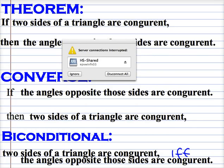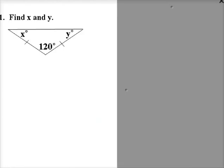Let's use that to solve some problems. Here I have an isosceles triangle. I know it's isosceles because of the congruence marks on the legs. If the legs are congruent, then the base angles are congruent. These are the base angles, and those are congruent. In other words, x and y are equal.